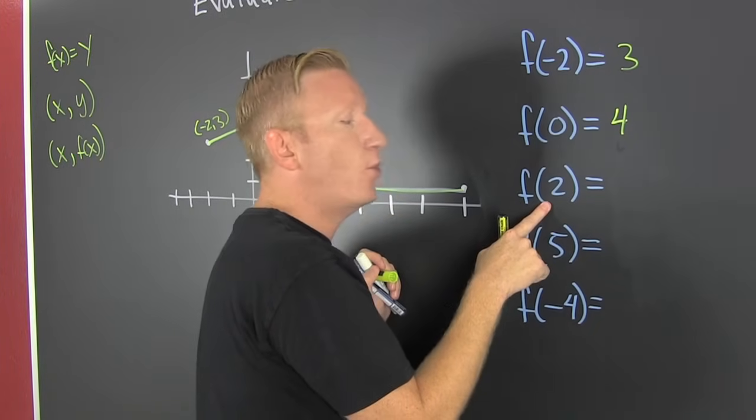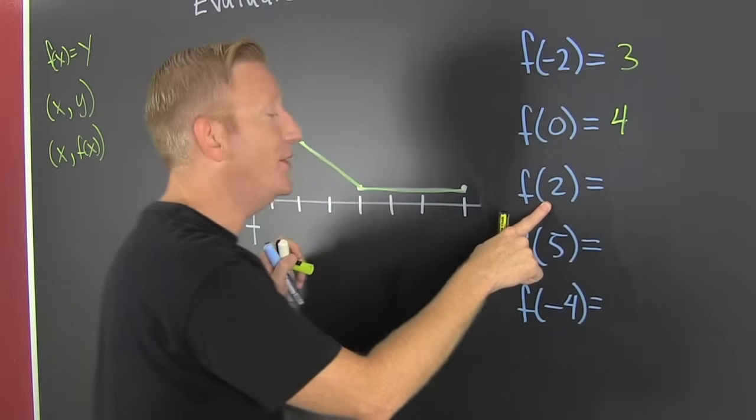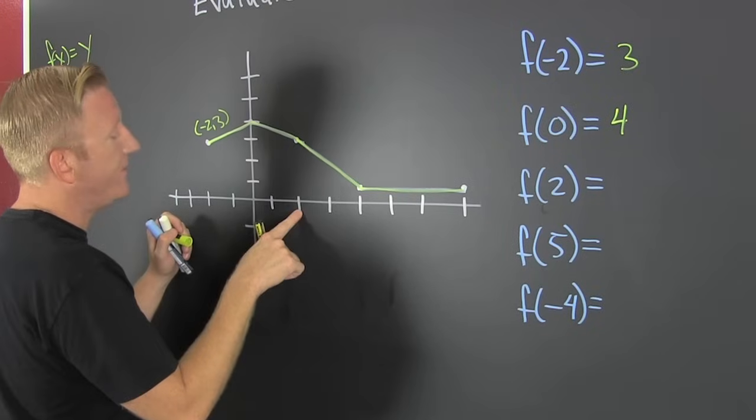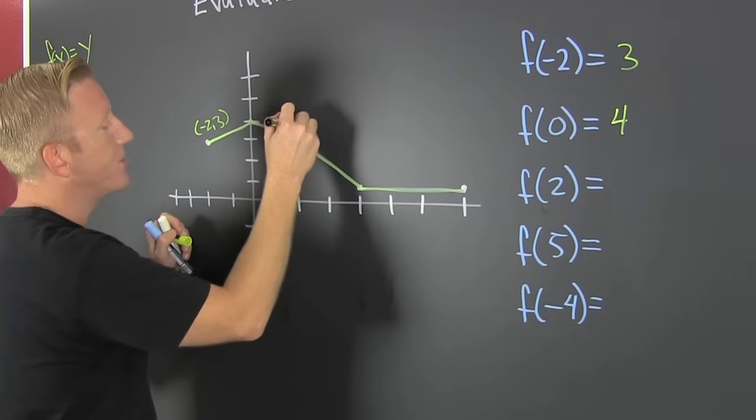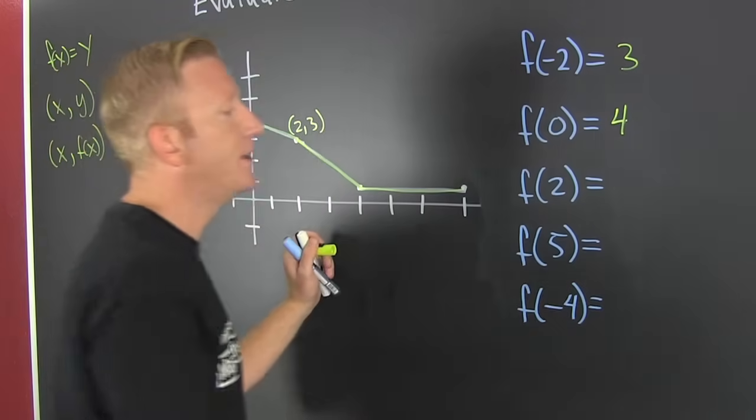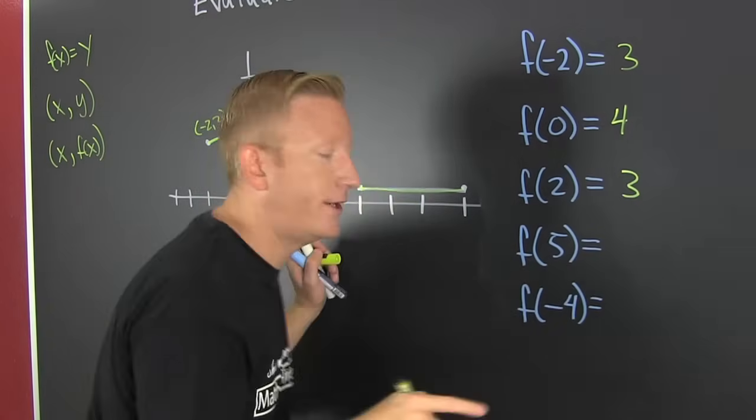Now it's asking what is the y value when f is 2, or f of 2. So we go over to where x is 2 and we see that that's going to be 3. That's 2 comma 3. So that's 3.